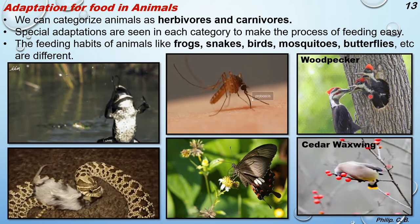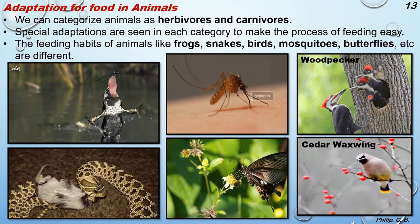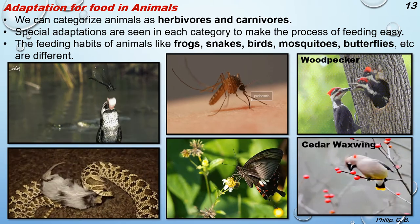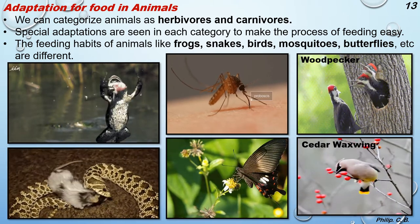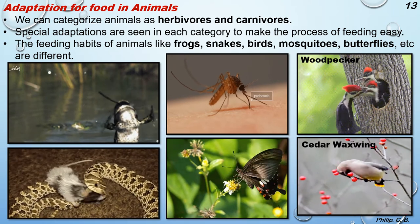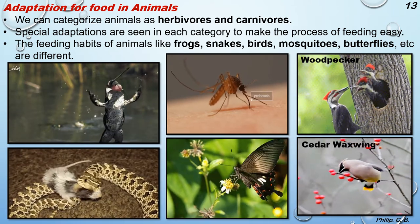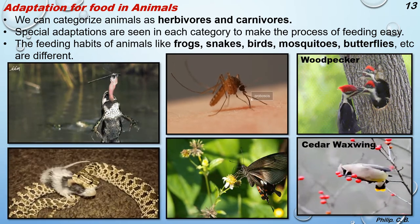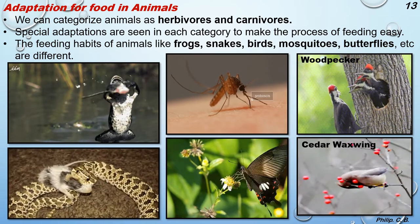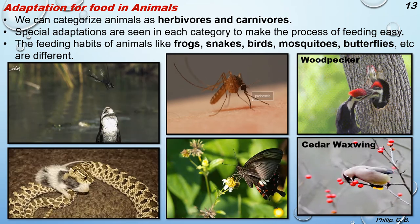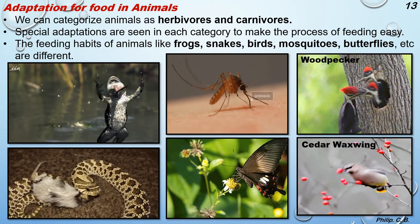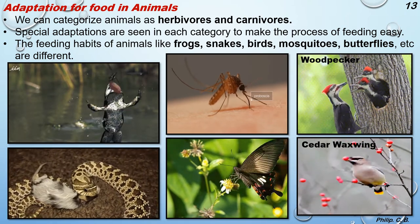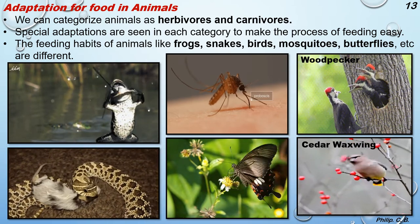The woodpecker has a pointed beak to make holes in trees and eat small insects and termites. The cedar waxwing eats small berries from trees. Different bird species have different beak types: pigeons have short, thick beaks for eating grains; parrots have thick, slightly curved beaks for eating fruits and nuts; woodpeckers have pointed beaks for eating insects; and vultures and eagles have long, pointed, curved beaks for tearing the flesh of prey.